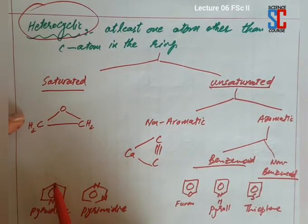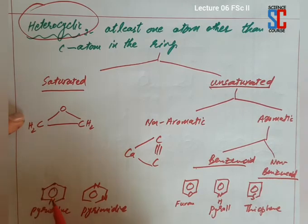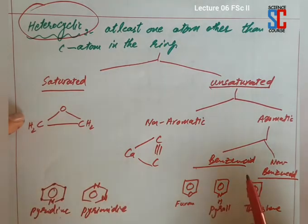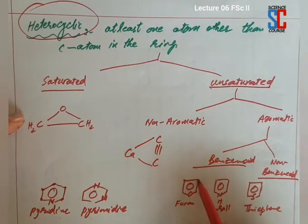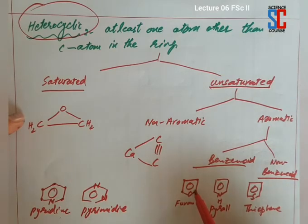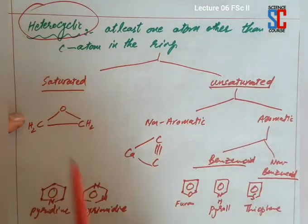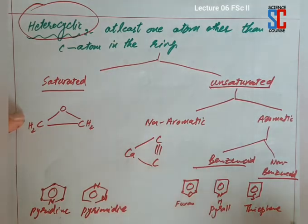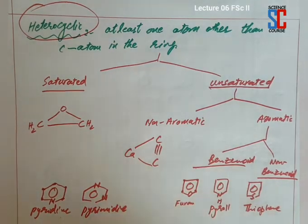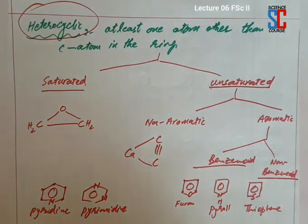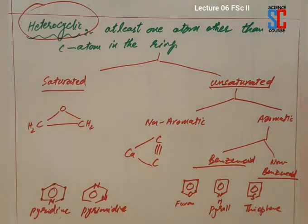Heterocyclic hain aur structure bhi benzene se match nahi kerta. Benzene ke 6 corners hain, pyridine ke bhi 6 corners hain. But yahan pe as you can see ye 5 corners hain. Ye non-benzenoid aromatic heterocyclic compound ki examples hain: furan, pyrrole, and thiophene.